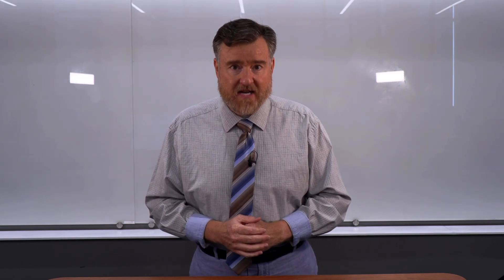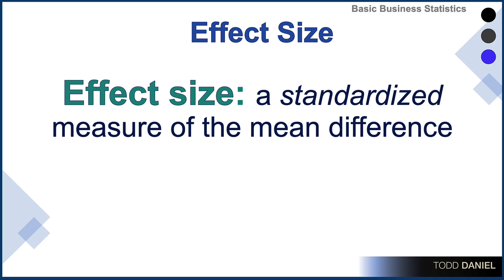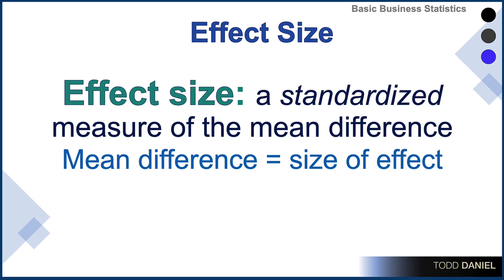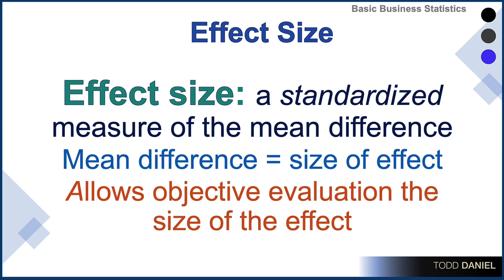What we get with an effect size is a standardized measure of the mean difference — the difference between the sample mean and the population mean, or the difference between the experimental group mean and the control group mean. The mean difference is the size of the effect. And by standardizing that mean difference, we can allow for objective evaluation of the size of the effect. We can compare an effect size between studies in a way that we simply can't do with p-values.